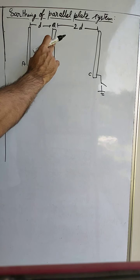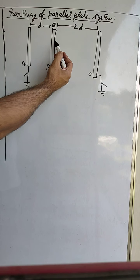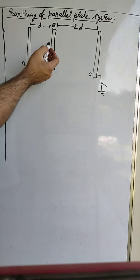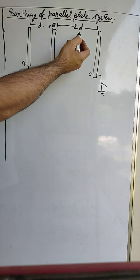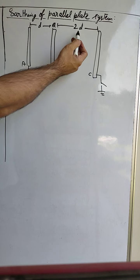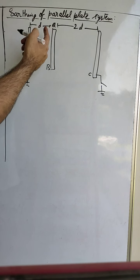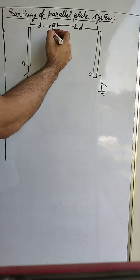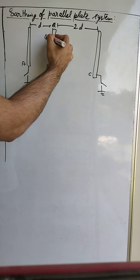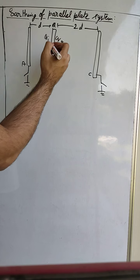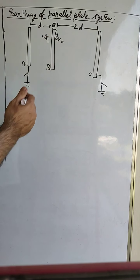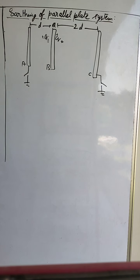Now if we had only plate B, the charge would be equally divided as +Q/2 and +Q/2 on both surfaces. But since the distances are unequal — D on one side and 2D on the other — Q will be divided unequally on both surfaces. Let us say this surface has charge Q1 and this surface has charge Q2.